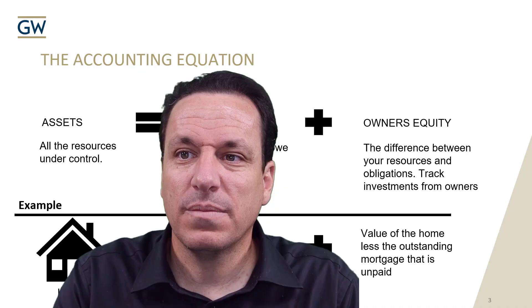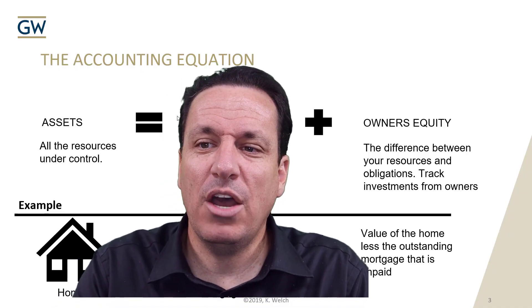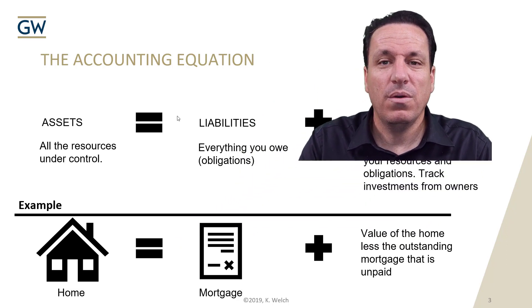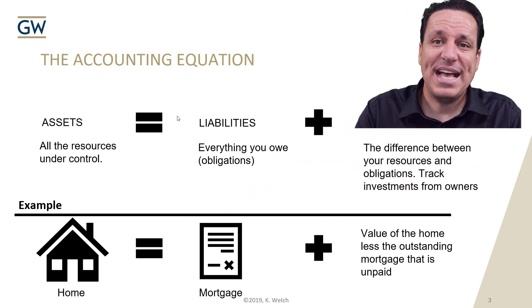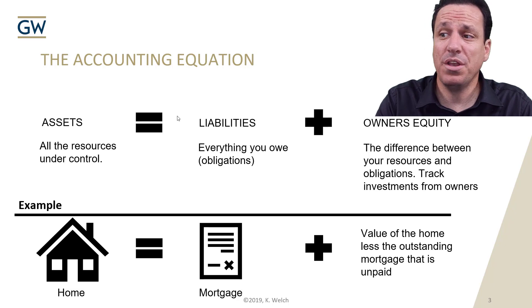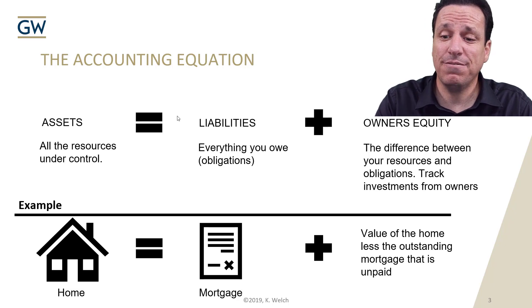We're going to talk about balance sheet accounts in interesting and quirky settings, hopefully things that help you remember what ends up on a balance sheet. We have the accounting equation: assets equals liabilities plus owner's equity. Assets are all the resources, liabilities are all the obligations, and owner's equity is the net difference.